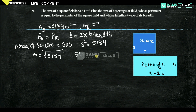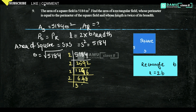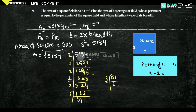So let's calculate 5184 using prime factorization. Starting with 2: 2 times 2 is 4, then continuing dividing by 2 repeatedly, and then by 3. We get: 5184 equals 2 into 2 into 2 into 2 into 2 into 2 into 3 into 3 into 3 into 3.